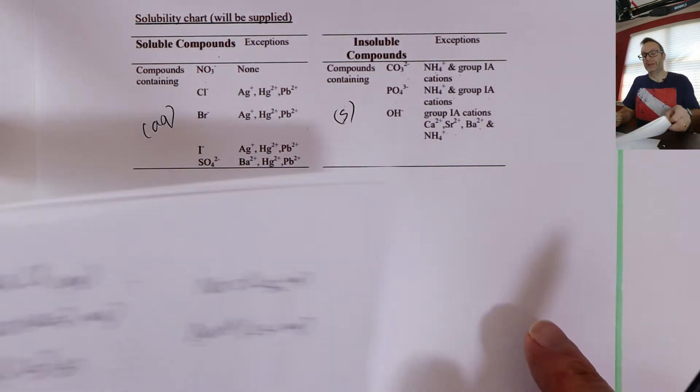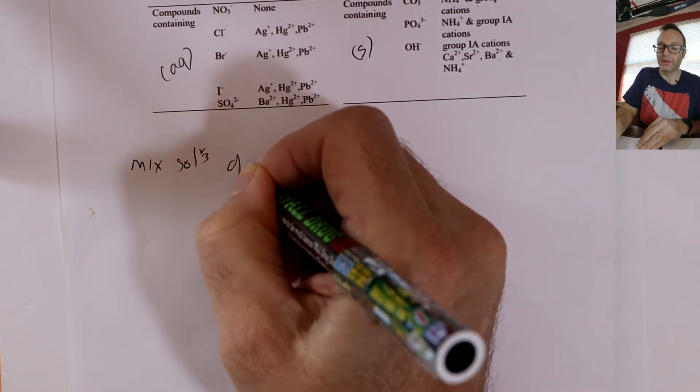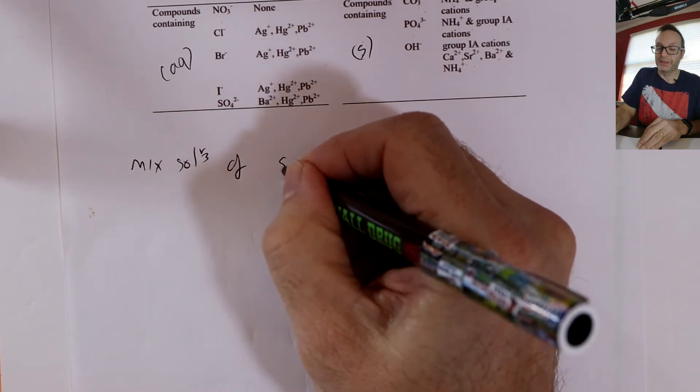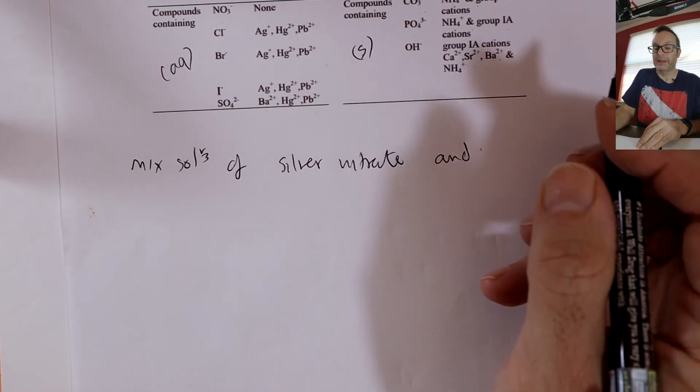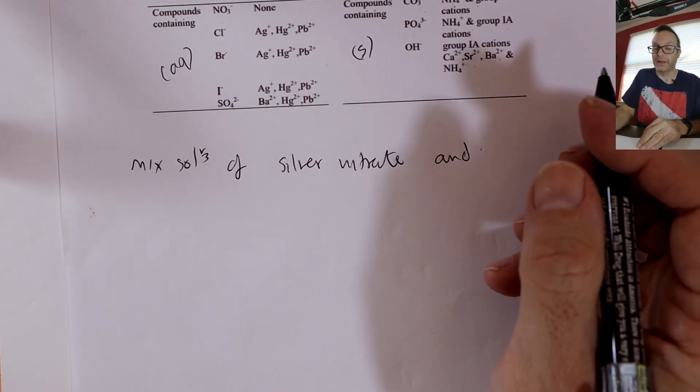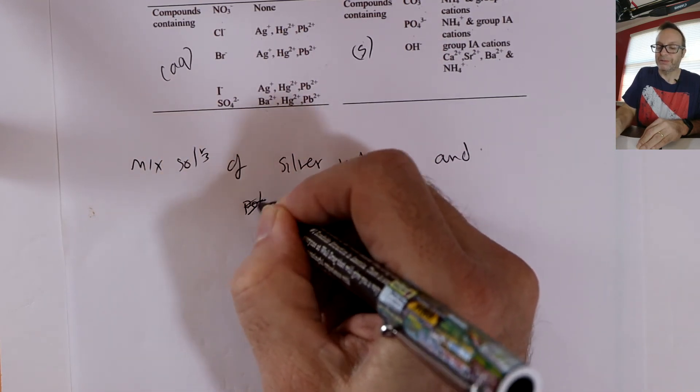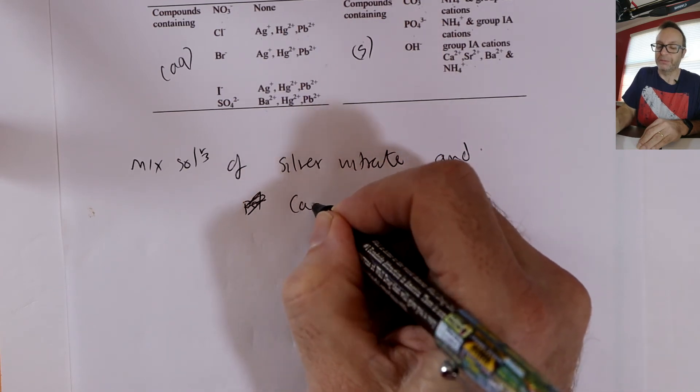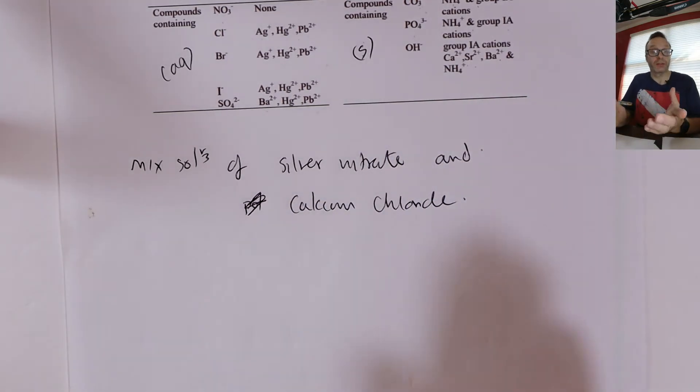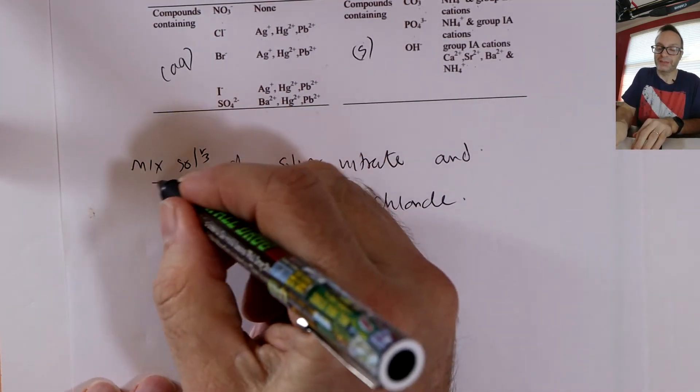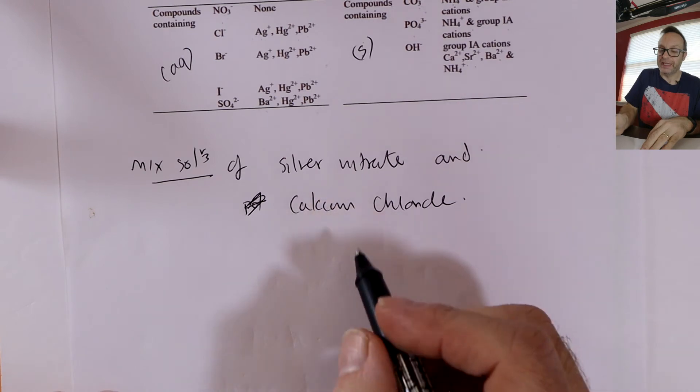All right, so let's give you a worked example. Let's just pick some random things. Mix solutions of, let's pick a classic, silver nitrate. And let's say something like, let's make it interesting, let's make calcium chloride. So we're mixing those two solutions. Now it says they're solutions, and they have to be solutions when you mix them because they have to kind of swap partners. They can only do that when they dissolve, but it's names to formulas.